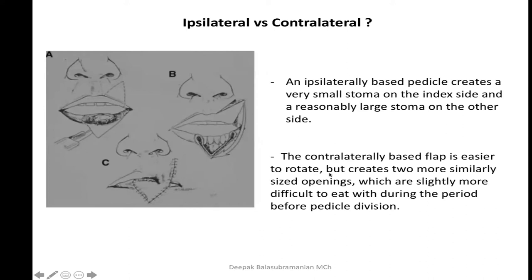A contralaterally based flap is easier to rotate but creates two small-sided openings, making eating difficult before pedicle division. An ipsilaterally based Abbe flap is a good option for defects one to two-thirds of the lower lip and allows acceptable eating while the pedicle is intact. Prior to division, always occlude the pedicle with a rubber tourniquet or gauze to check vascularity by pricking it — only if vascularity is confirmed should the pedicle be divided; otherwise, wait a few more weeks.